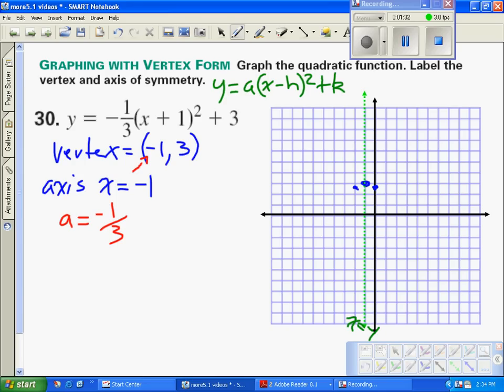Now we're going to plot a couple more points, x and y, and go two places beyond the axis of symmetry at negative 3 and 1. When we plug those in, y equals negative one-third times negative 3 plus 1, which is negative 2, squared, plus 3.